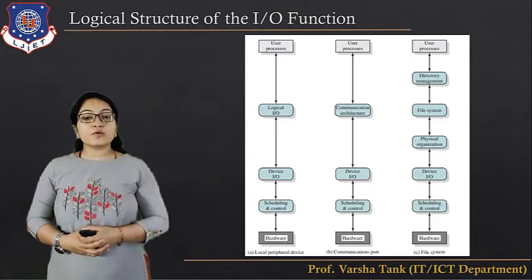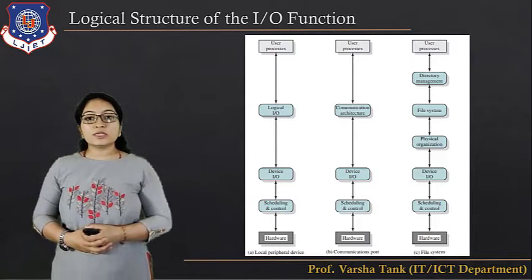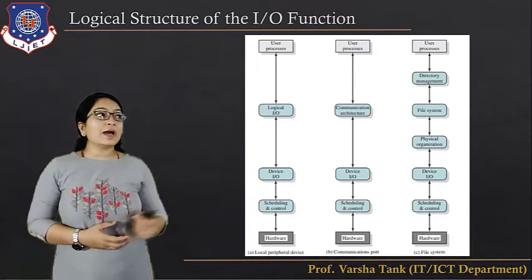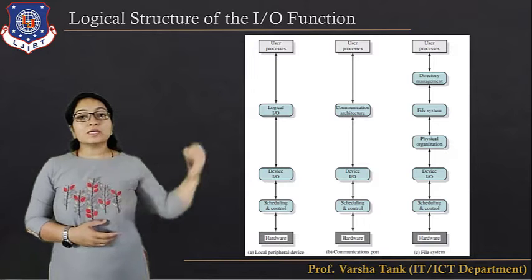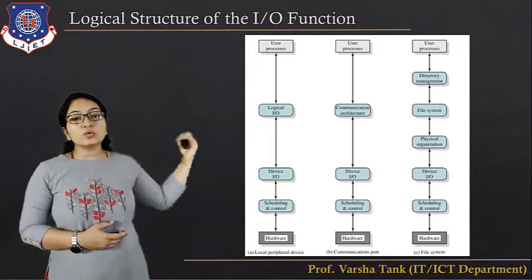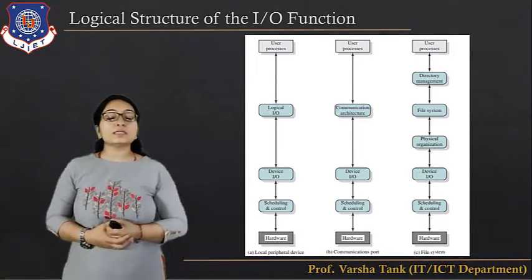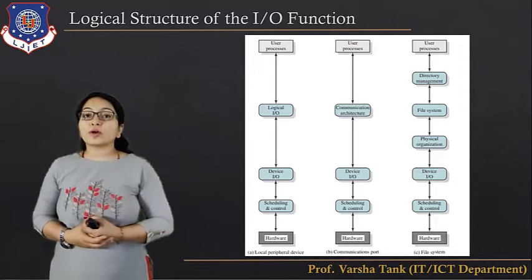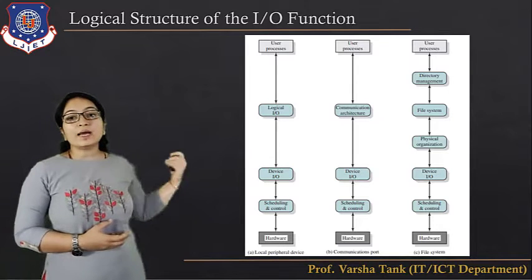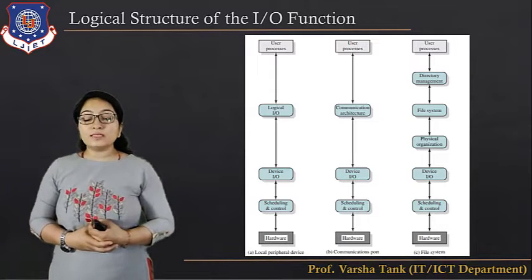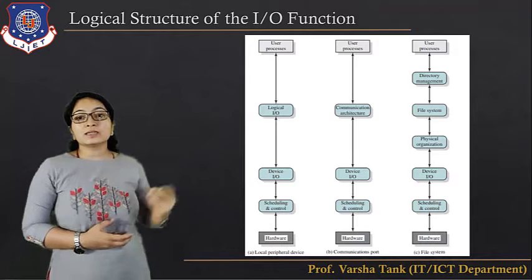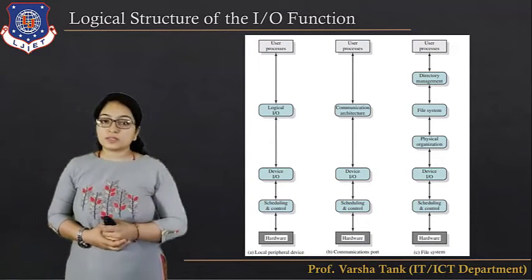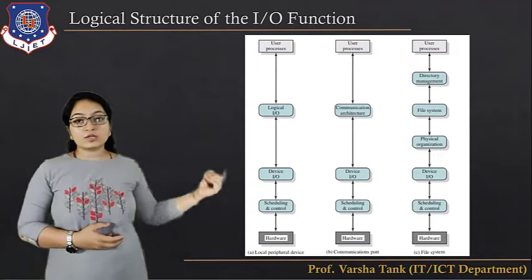The three types of IO organization are: local peripheral device, communication port, and file system. In the first type — local peripheral device — the layers are: scheduling and control, device IO, and logical IO.